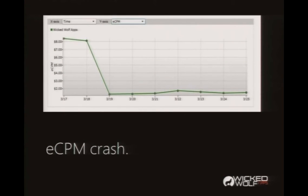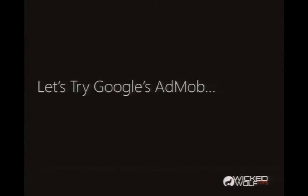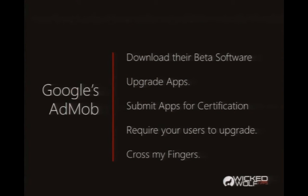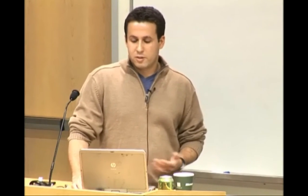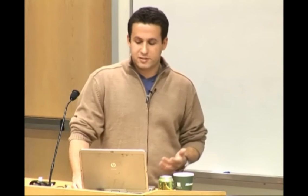This affected pretty much everyone across the board who was using ads at the time. I figured I'd try Google's AdMob since there are competitors. What I needed to do was download their software — and like all Google software when it comes out, it's beta — upgrade my apps, submit for certification, wait a couple of days, require all my users to download it, and cross my fingers that Google's eCPM was higher. My eCPM slowly rose to $2.04, which I was happy with. But it was still a pain, and what happens if Microsoft started to pay $4 and I had to have all my users upgrade again?